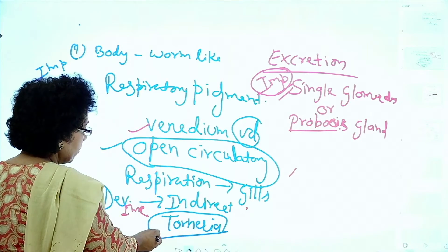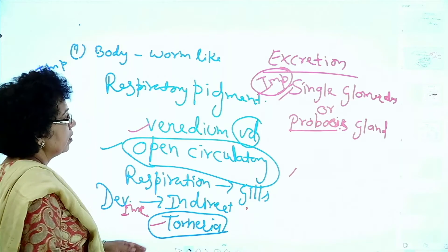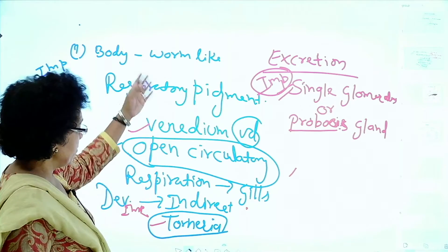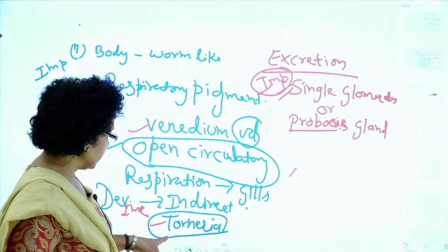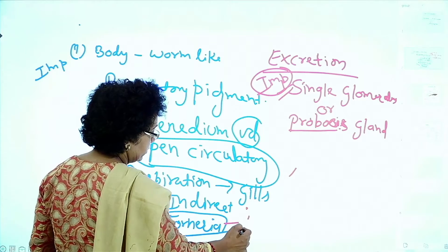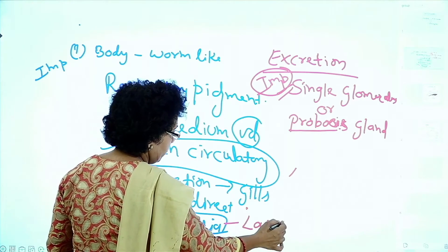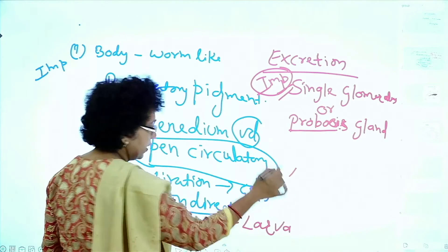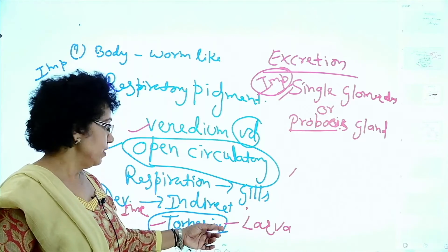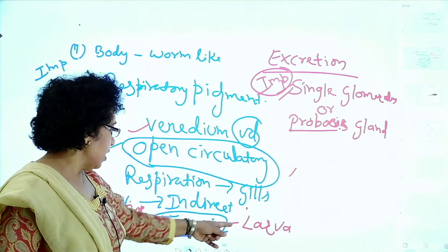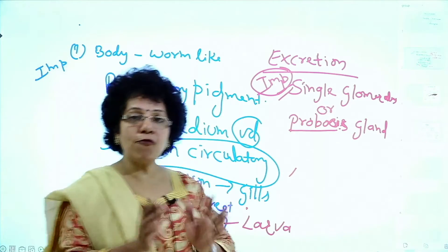Development is indirect and the larva is Tornaria. The Tornaria larva is present in Hemichordata. Trocophora is another larva type.